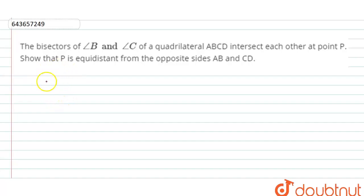This question is from geometry. The question says: the bisector of angle B and angle C of a quadrilateral ABCD intersect each other at point P. Show that P is equidistant from the opposite sides AB and CD. It's absolutely clear that we need to draw a quadrilateral.